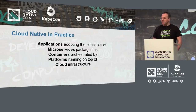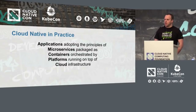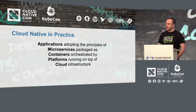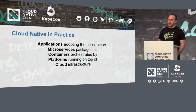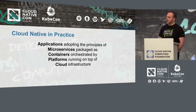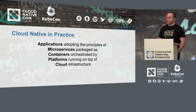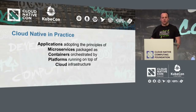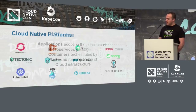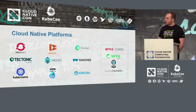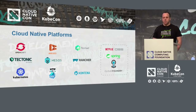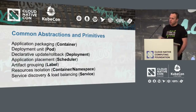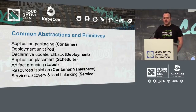There are many definitions about cloud native, but if we look at cloud native applications in practice, these are applications that are implemented following the principles of microservices. They typically run in containers orchestrated by platforms on top of cloud infrastructure. And if we follow this definition, there are many platforms that actually qualify as cloud native today.